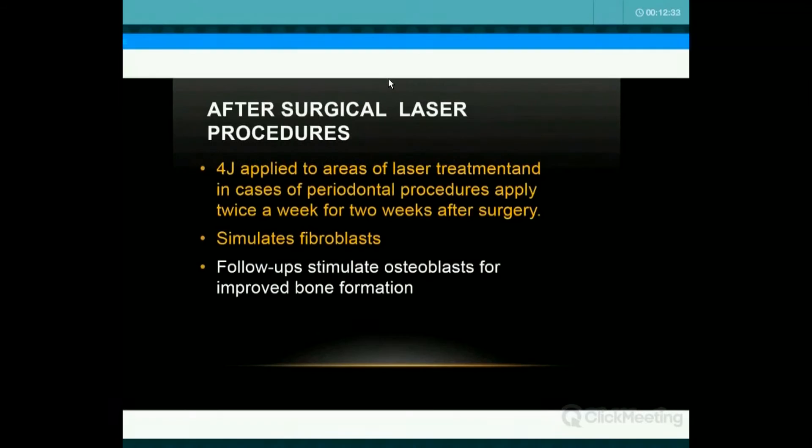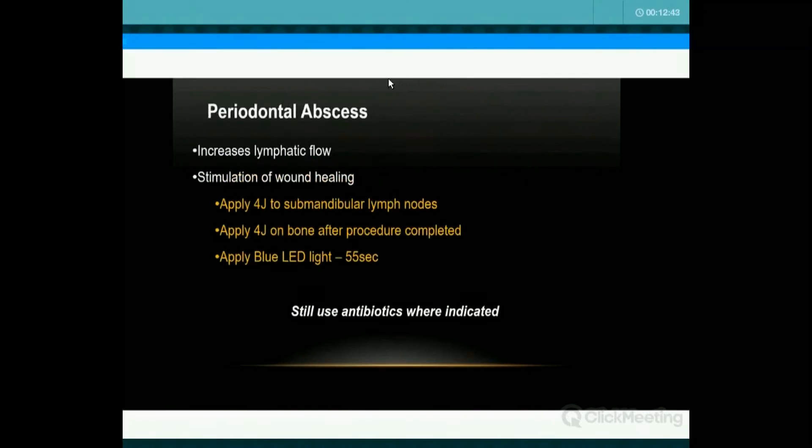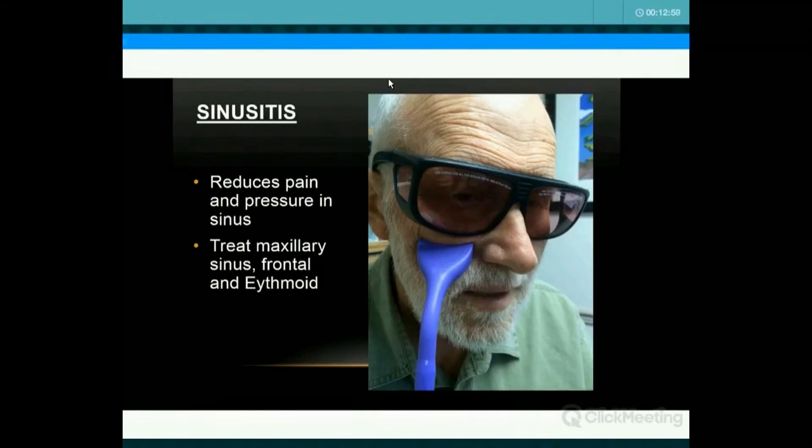If I've done laser surgery, after I've finished I use the stimulation dose to get faster soft tissue healing. For a periodontal abscess, you're going to treat the lymph nodes first. Then you're going to use your blue LED curing light — a curing light can kill bacteria — doing 55 joules over 55 seconds.